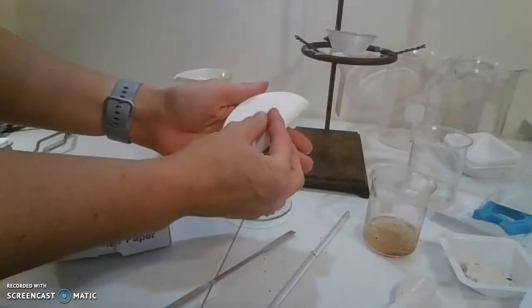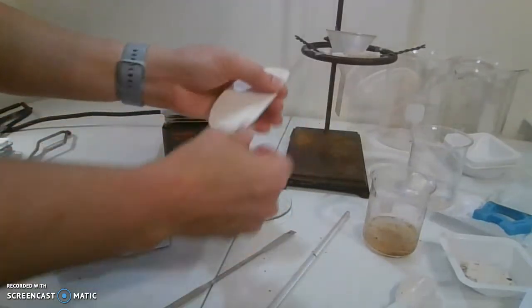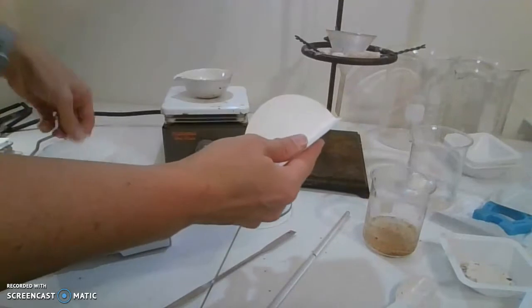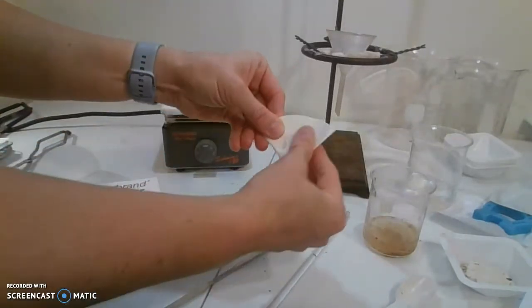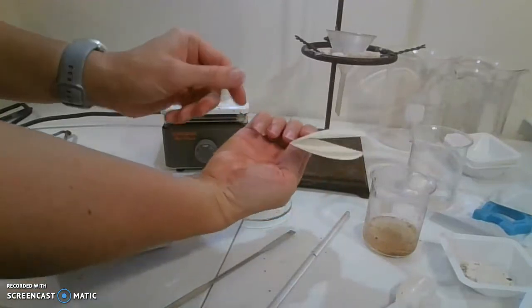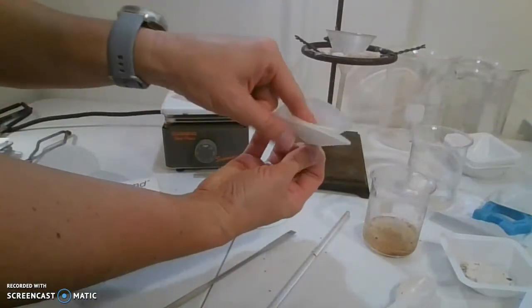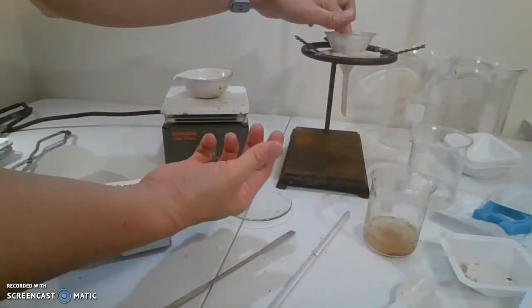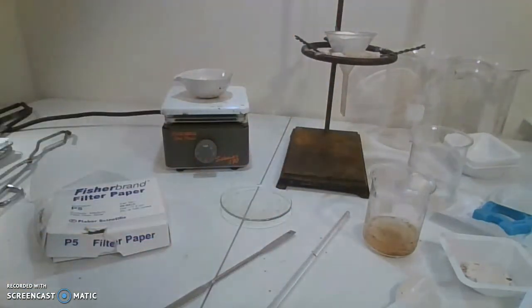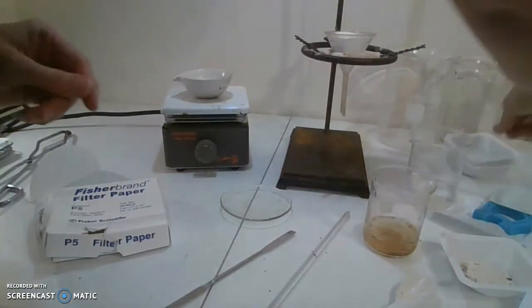We're going to fold it in half one time, and then a second time, so make a little quarter. And then I choose to put my finger between one and three to make the paper cup. Make sure I have something underneath.